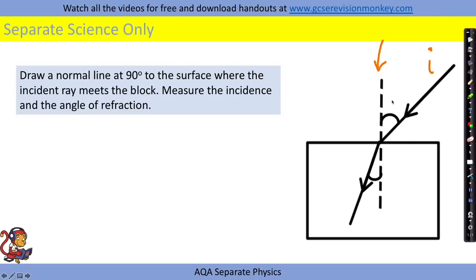We need to measure the angle of incidence which is between the incident ray and the normal line and the angle of refraction. So this is the refracted ray going through so this is our angle of refraction.